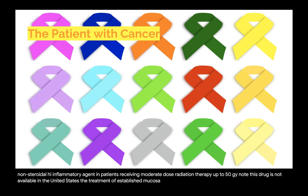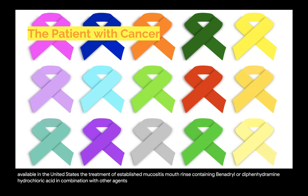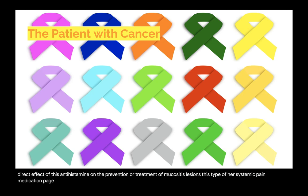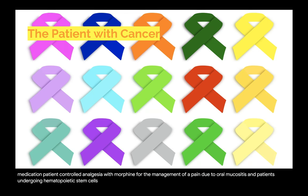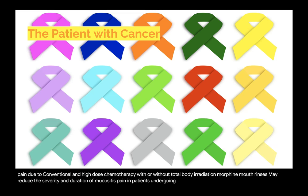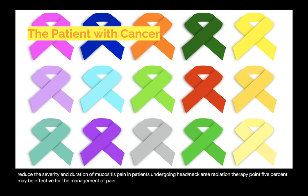For treatment of established mucositis: mouth rinses containing Benadryl (diphenhydramine hydrochloride) in combination with other agents — usually coating agents and topical anesthetic — are often used to palliate pain topically, though evidence does not support a direct effect on prevention or treatment of mucositis lesions. Systemic pain medication includes patient-controlled analgesia with morphine for mucositis pain in hematopoietic stem cell transplant patients. Transdermal fentanyl patch may be effective for mucositis pain due to conventional and high-dose chemotherapy with or without total body irradiation. Morphine mouth rinses may reduce severity and duration of mucositis pain in head and neck radiation therapy patients. Doxepin mouth rinse 0.5% may be effective for management of pain due to oral mucositis.